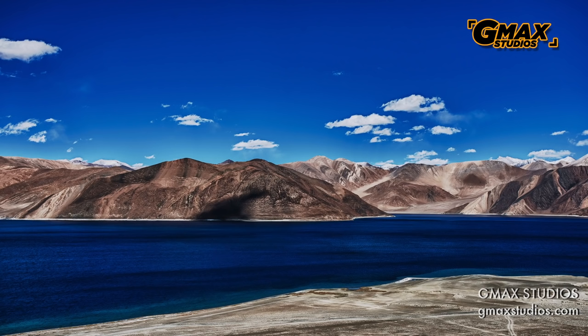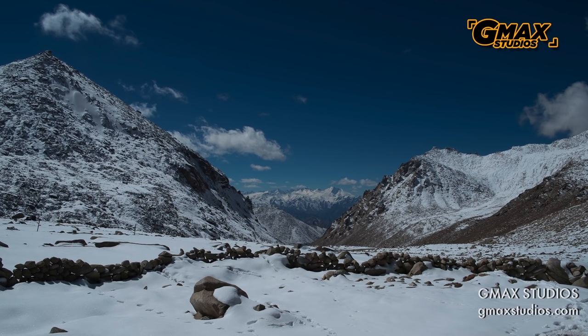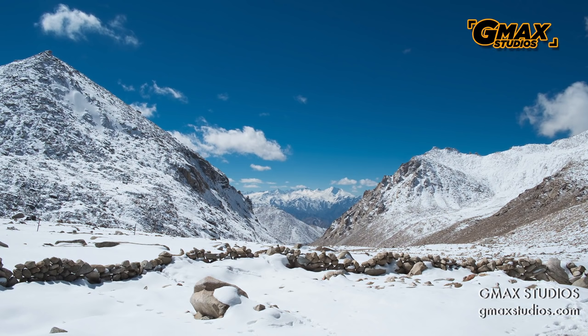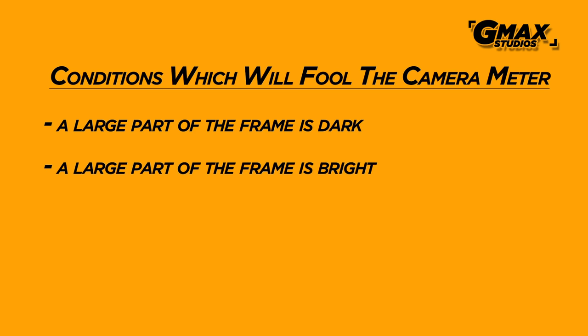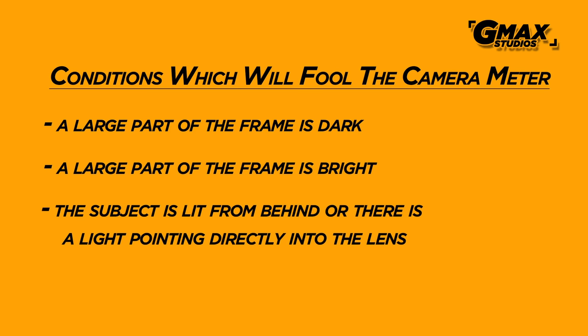The problem starts when there are bright or dark objects within the frame. For example, a simple landscape photograph with snow turns out to be underexposed when it should not be. There are primarily three or four conditions under which your camera will get fooled and give you a false reading: one, a large part of the frame is dark; two, a large part of the frame is bright; and three, there is a light pointing directly into the lens or your subject is lit from behind.